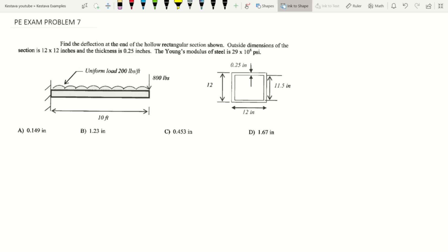For our member we have a 10 foot span as denoted here, we have a uniform load of 200 pounds per lineal foot and we have an 800 pound point load at the end of our cantilever. So we have that cantilevered member and over here we have the cross section.